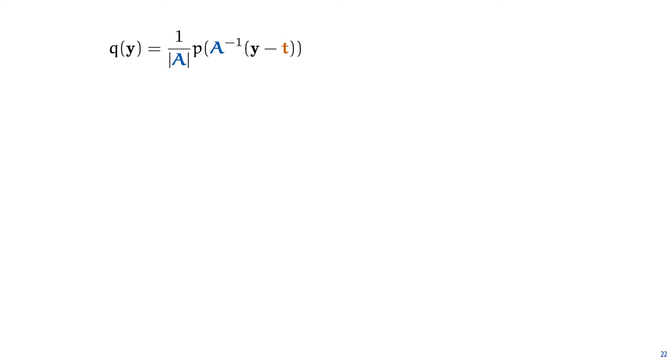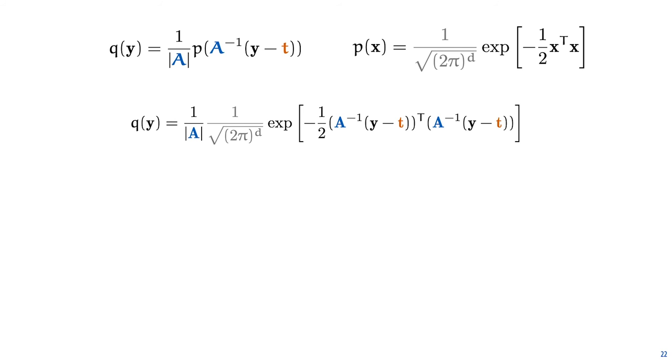So with that in hand, we can work out what the distribution q(y) is. We start with what we have, and we fill in the definition of p, which is the definition of the standard normal density that we already have. This gives us this expression for q. Note that the x's in the expression on the right have now been replaced with the reverse transformed y.